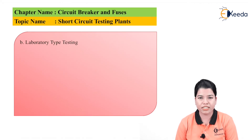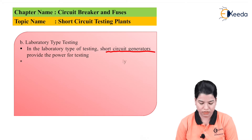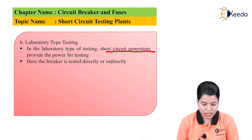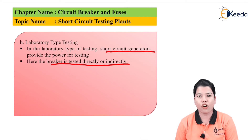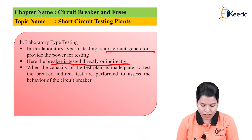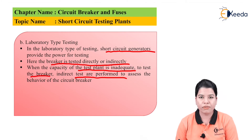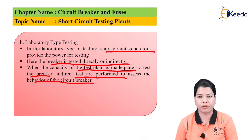In the laboratory type of testing, short circuit generators are provided for the power testing. The breaker can be tested either directly or indirectly. The short circuit generators provide the short circuit voltage for testing the circuit breaker. When the breaking capacity of the test plant is inadequate, an indirect test can be performed to assess the behavior of the circuit breaker. There are two types of tests: direct test and indirect test.